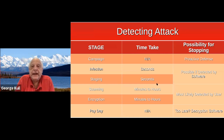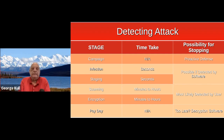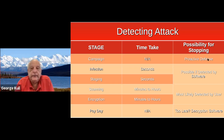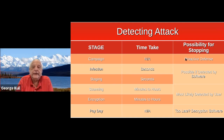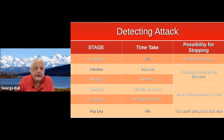Getting back to detecting ransomware — here I show the time taken and the possibility of stopping the attack during different stages. The campaign phase is really about proactive defense: make sure your systems and software are up to date, coming from reliable sources, and that you don't reuse passwords. I'll talk about it in the next slide.